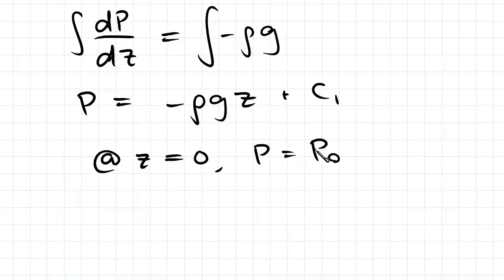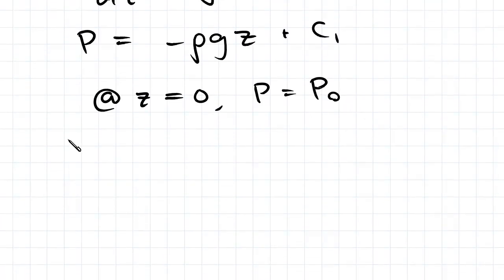So the pressure on top of the fluid is P0. Then our P equals P0 minus rho g z.